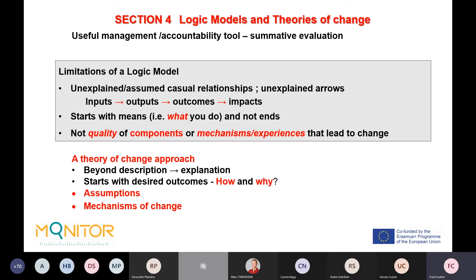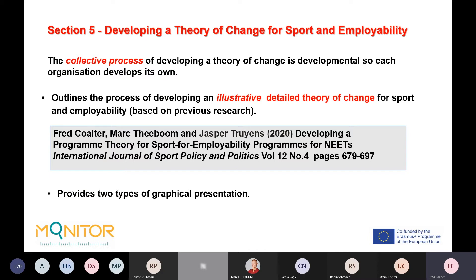A theory of change starts with desired outcomes: what is employability, and how and why do our programs address those issues? It forces you to outline and question your assumptions, and it asks you to address the mechanism of change — what is it about your activities that will lead young people to change their attitudes and develop skills? Section Five outlines how to develop a theory of change for sport and employability. This is a collective, developmental process, with each organization developing its own.